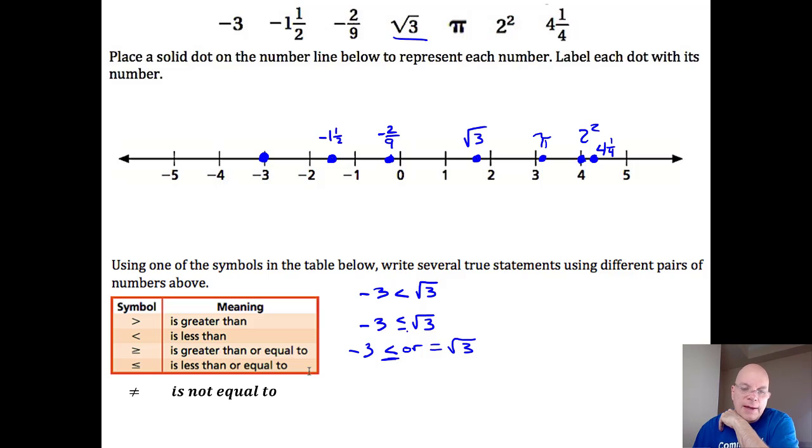And you might think, well, why would you even do that? You wouldn't with numeric values, but you might with a variable. Like you might say x is less than or equal to two squared, which means the value of x could be any number less than four or four, all the way up to and including four. And so if you haven't tried to write a few of these, you should try to write some.